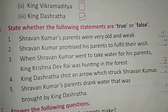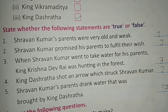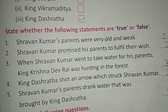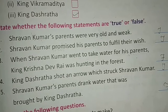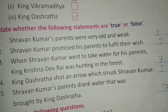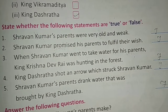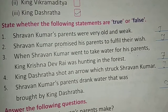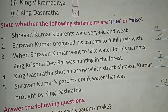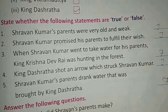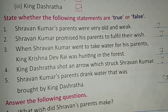After that, True or False. First: 'Shravan Kumar's parents were very old and weak.' Shravan Kumar ke mata-pita bahut boodhe aur kamzor the. So the answer is True. Second: 'Shravan Kumar promised his parents to fulfill their wish.' Shravan Kumar ne apne parents ko promise kiya tha ki woh unki wish poori karega. So the answer is True. Likewise, you have to do the next three.